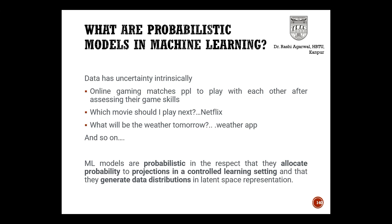Similarly, the weather app tells you what the weather will be tomorrow — it is assessing based on the environmental parameters known to it. So wherever there is data, there is some amount of uncertainty involved. Machine learning models are probabilistic in the respect that they allocate probability to projections in a controlled learning setting and they generate data distributions in latent space representation.